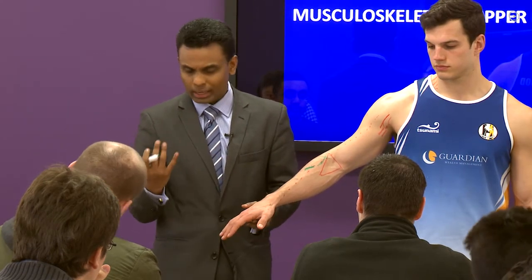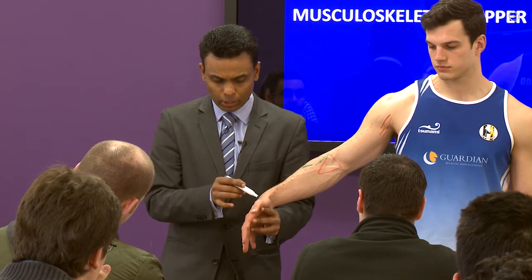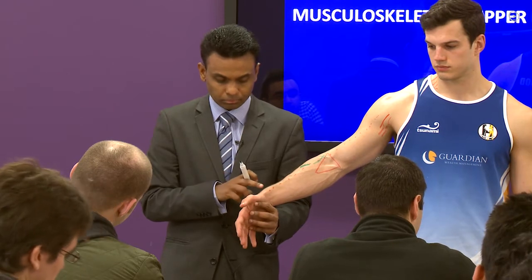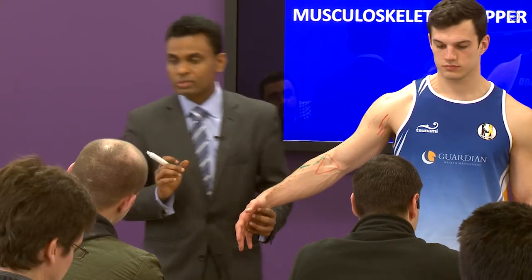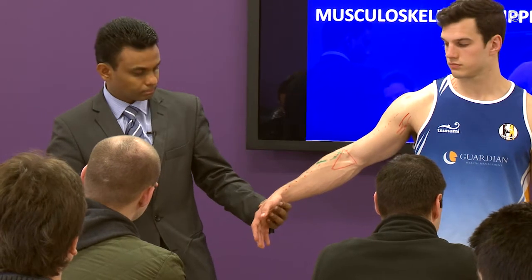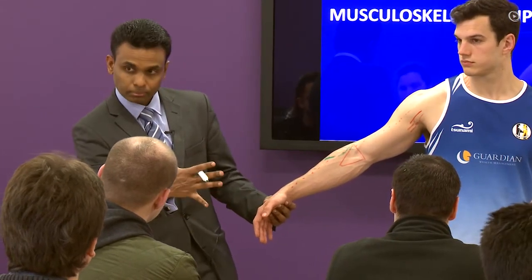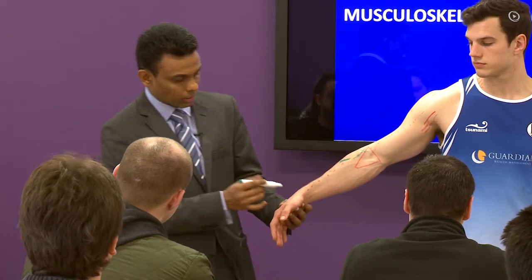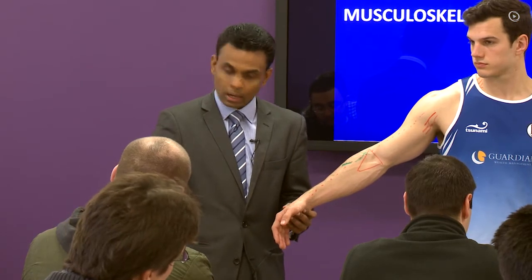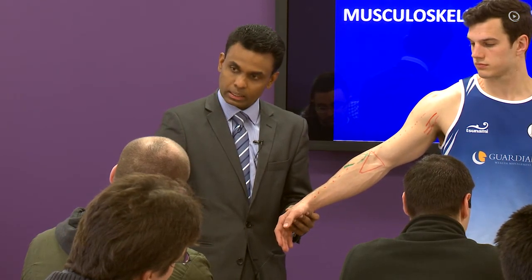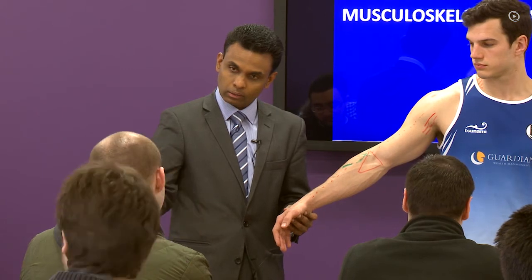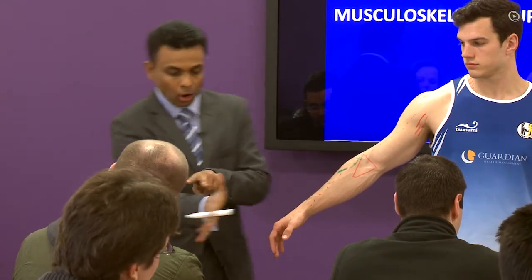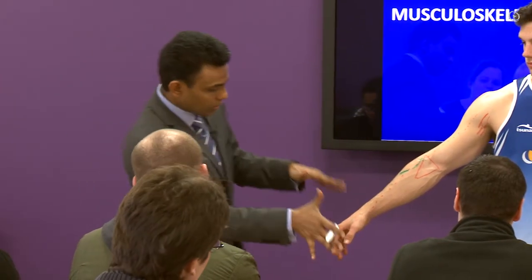You can get a question on the snuff box — boundaries and contents. Boundaries: on the ulnar side you have the extensor pollicis longus, and on the radial side extensor pollicis brevis and abductor pollicis longus. So two longus muscles and one brevis. Lift the thumb up — that's your extensor pollicis longus on the ulnar side, extensor pollicis brevis, and abductor pollicis longus which abducts the thumb.